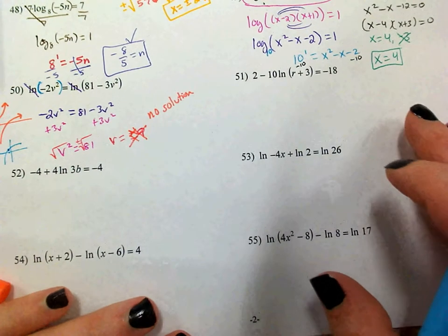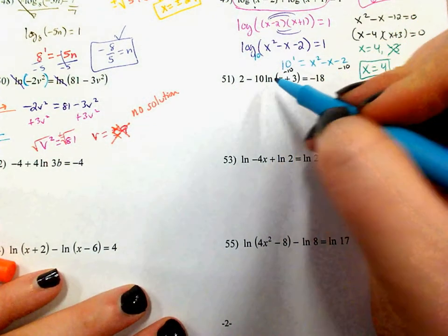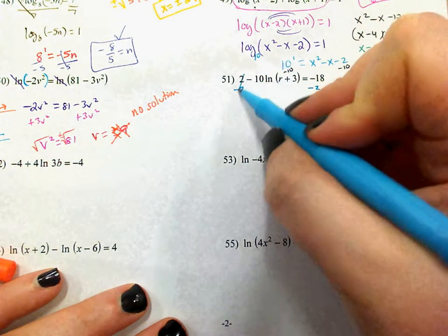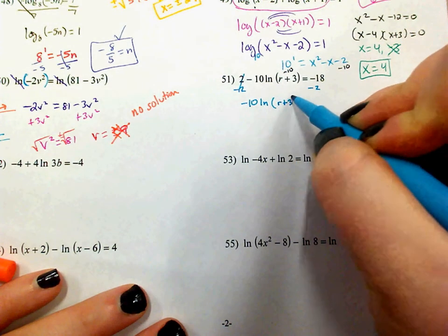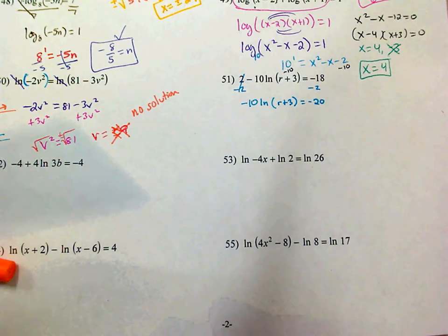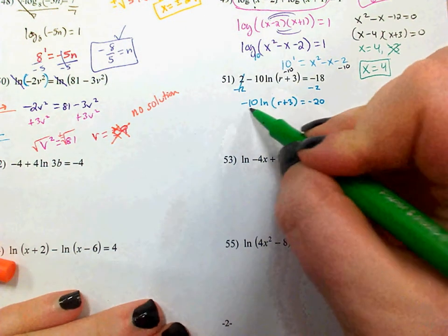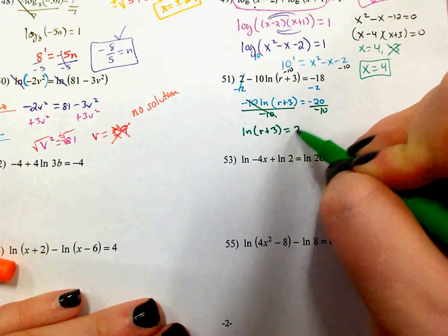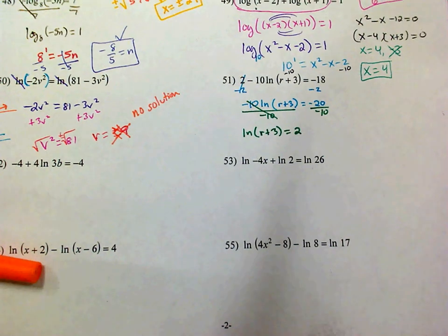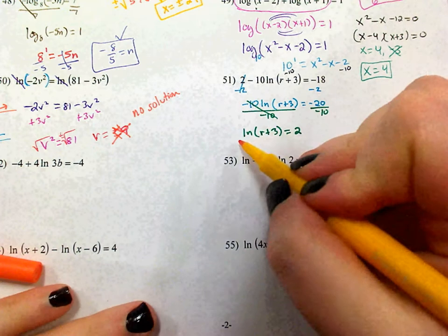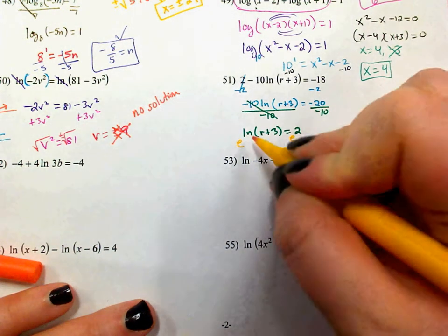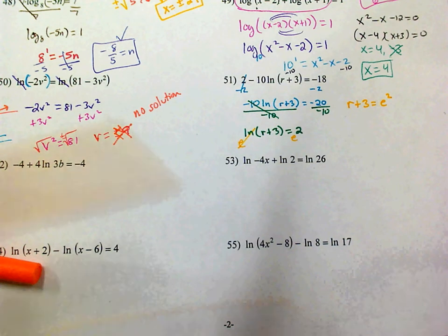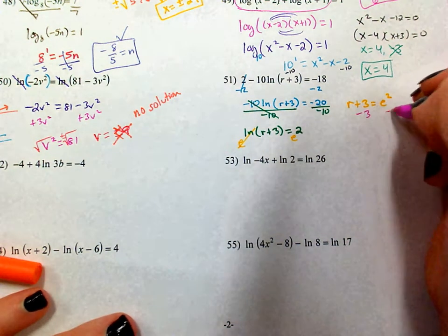On problem 51, I have 2 minus 10 times natural log of r plus 3 equals negative 18. Get the natural log by itself — subtract 2: negative 10 natural log of r plus 3 equals negative 20. Divide by negative 10: natural log of r plus 3 equals 2. Undo the natural log by raising both sides as a power of e — they cancel — leaving r plus 3 equals e squared. Subtract 3: r equals e squared minus 3.